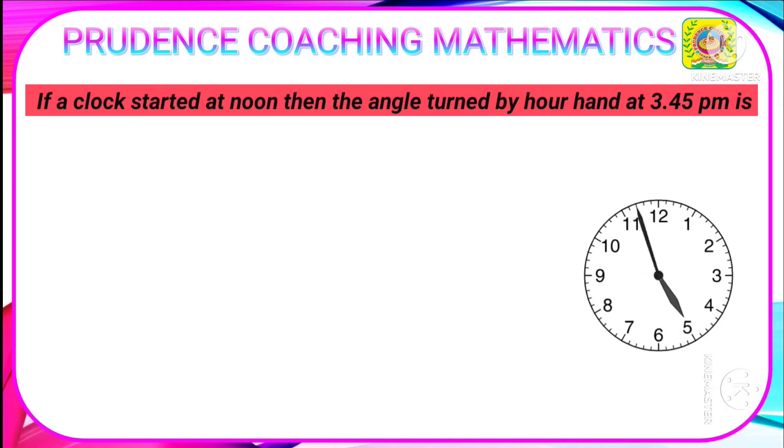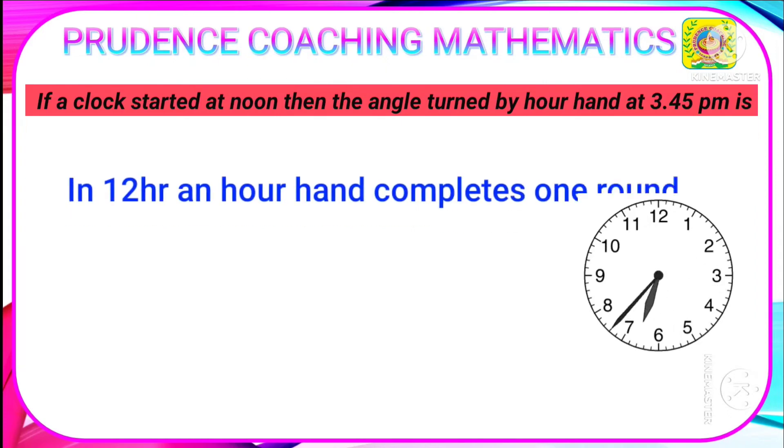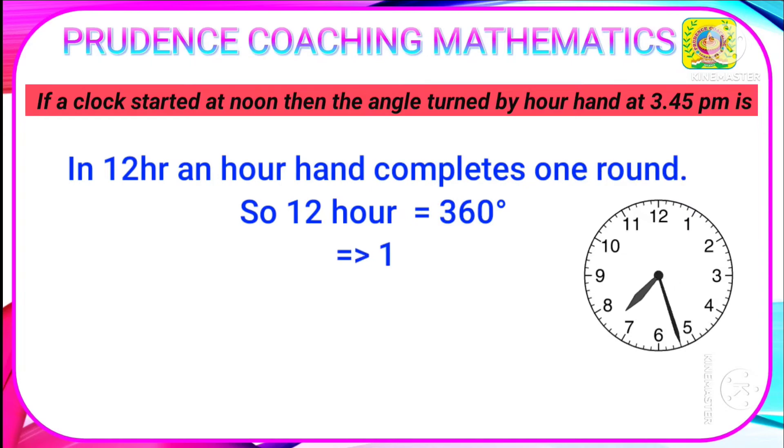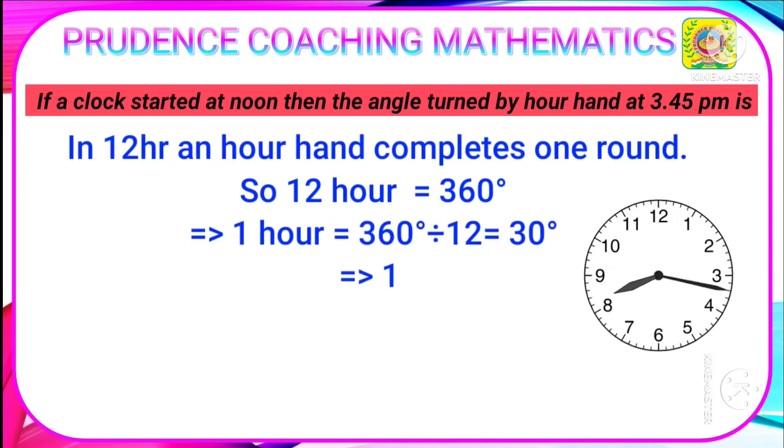How are you going to solve this? You need to know: In 12 hours, the hour hand completes one round in a clock, so it will cover 360 degrees. So in 12 hours it covers 360 degrees. In 1 hour, it will cover 360 degrees divided by 12, that is 30 degrees.